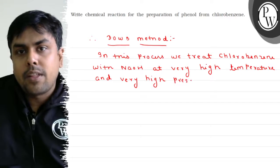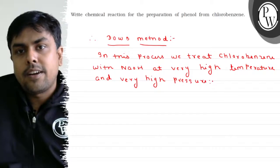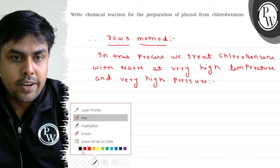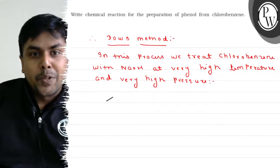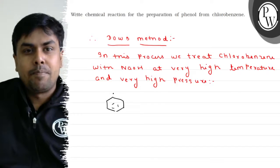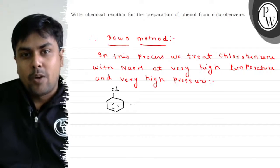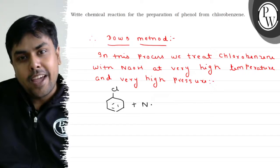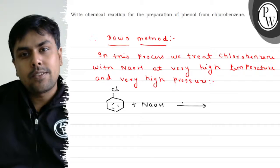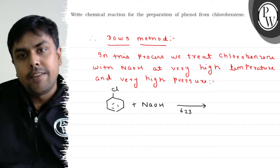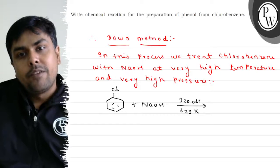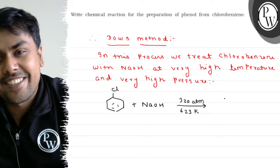How does this reaction happen? Let's try it. If you want to write the reaction, it can be written like this. I am having chlorobenzene structure, it is like this. Now I will treat it with NaOH, temperature here is approximately 623 K, pressure is 320 atm. We can see how high the pressure is.